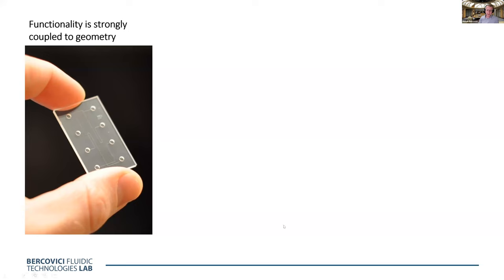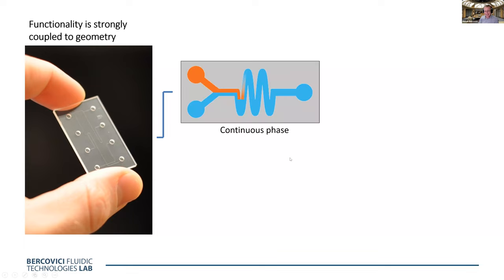We like to call it a lab-on-a-chip, but honestly we're still pretty far from that. This is closer to a protocol-on-a-chip. We decide a certain protocol and we can run it, but it's very different from a lab. In a lab, we run an experiment without knowing the result a priori, and based on what we see we decide on the next step. We don't really have those degrees of freedom in continuous phase microfluidics.